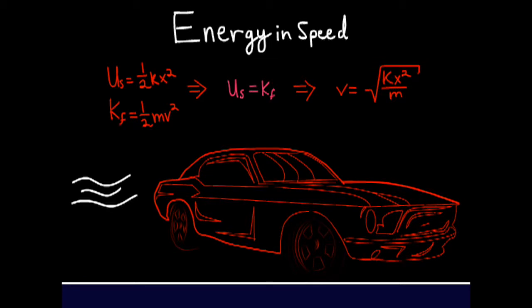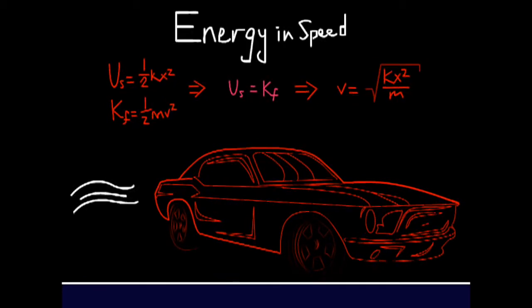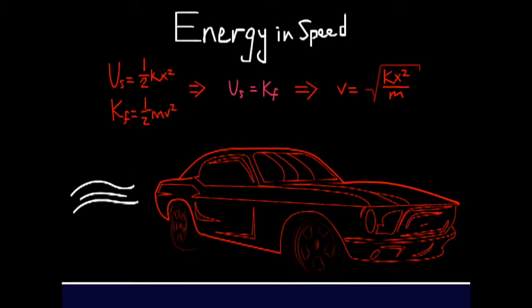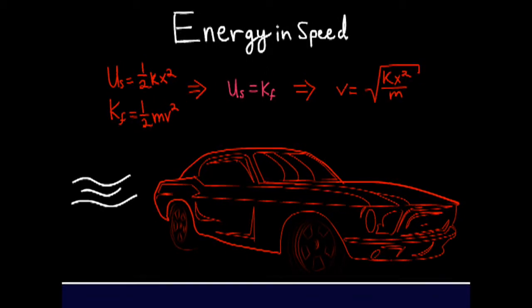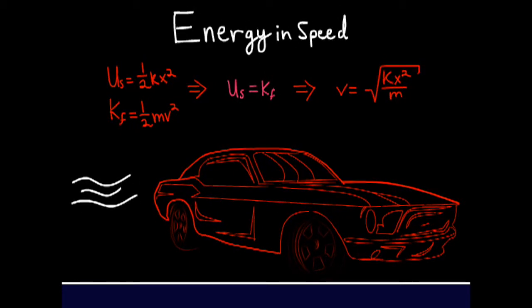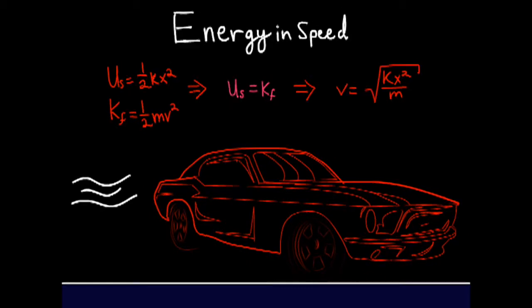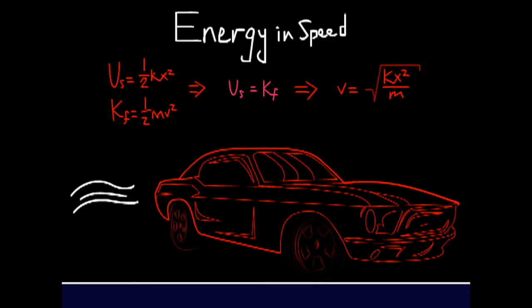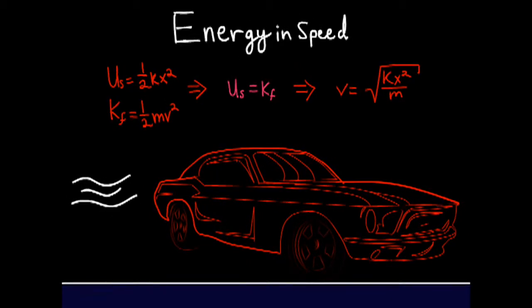Combining both potential and kinetic energy, we're able to equate them to each other and solve for velocity, which is now equal to the square root of kx squared over m, where m is the mass of the object that we're throwing and x is the amount of drawback in the string.